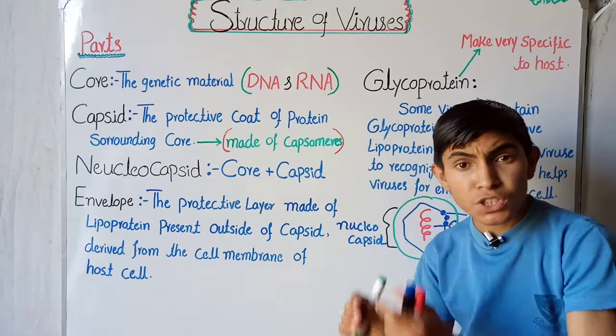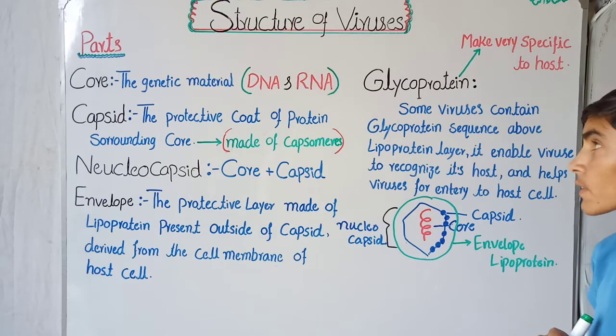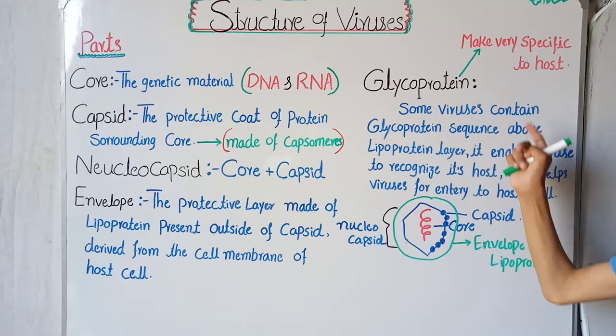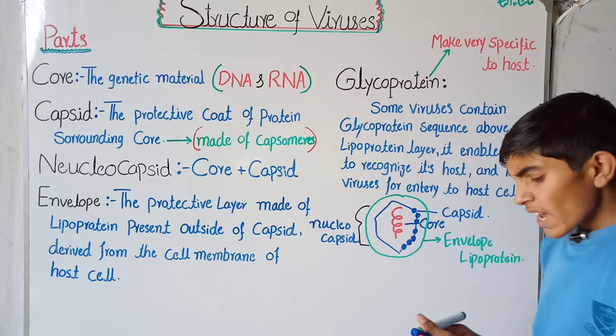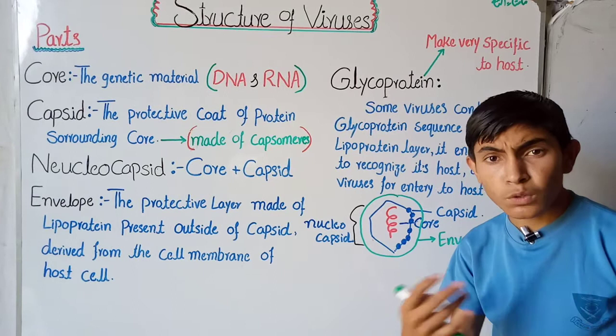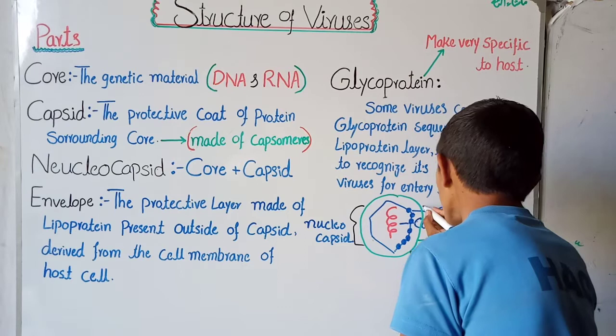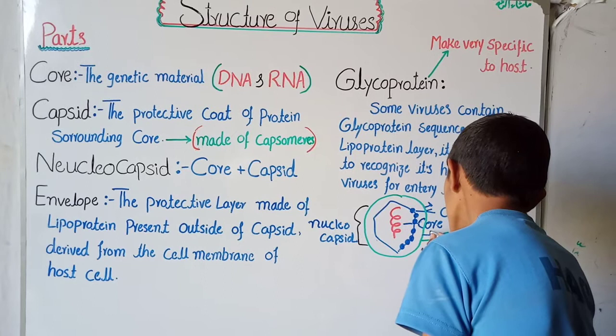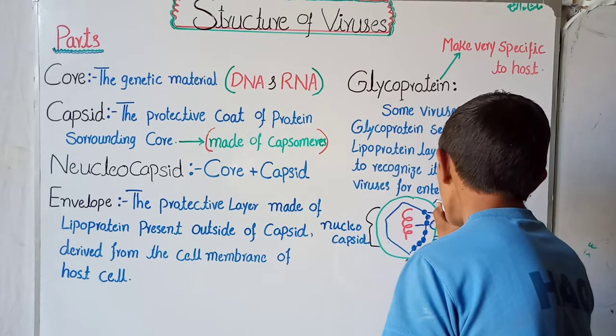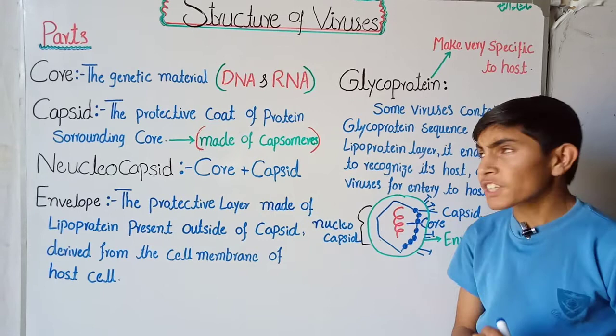The last part is the glycoprotein. Some viruses contain a glycoprotein layer above the lipoprotein. Glycoprotein means glycogen — glucose plus protein. This sequence surrounds the lipoprotein envelope and is called the glycoprotein cover.